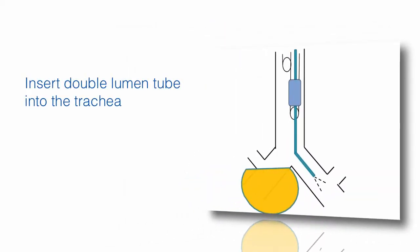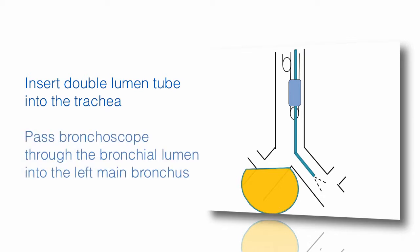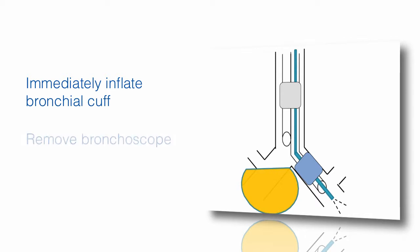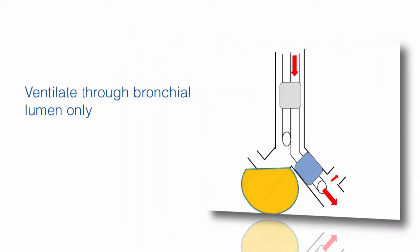Let's look in more detail at what we are planning to do. First, the double lumen tube is inserted into the trachea. Next, a bronchoscope is passed down the bronchial lumen and advanced directly into the left main bronchus. The bronchial cuff is immediately inflated and the bronchoscope withdrawn. The breathing circuit is attached directly to the bronchial lumen, ensuring the lung is isolated and the triple challenge achieved.